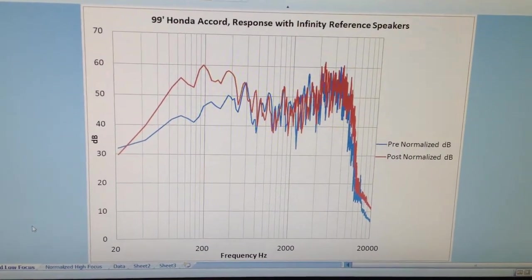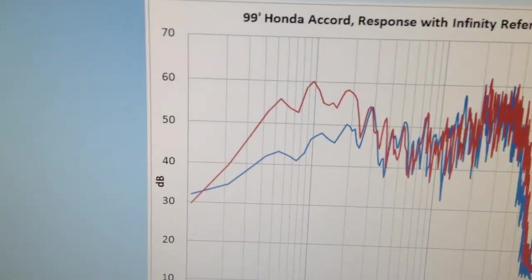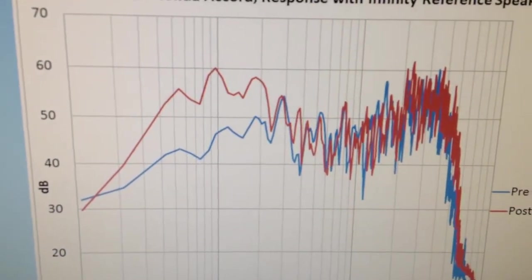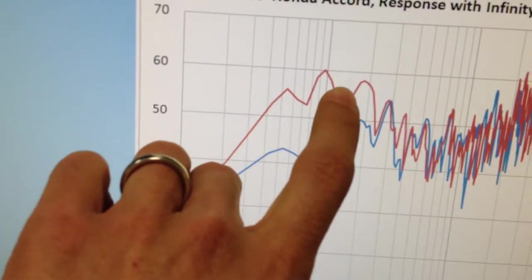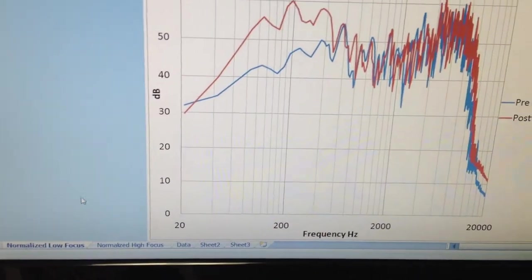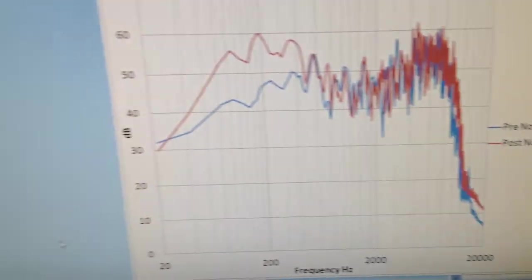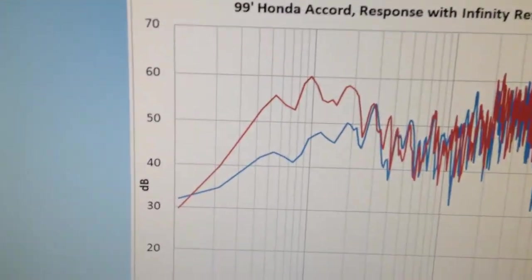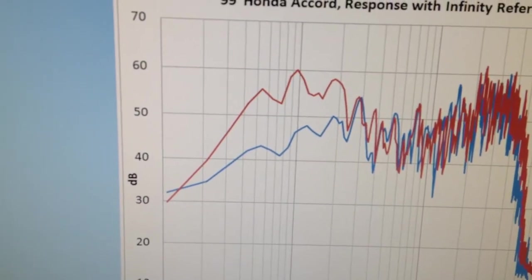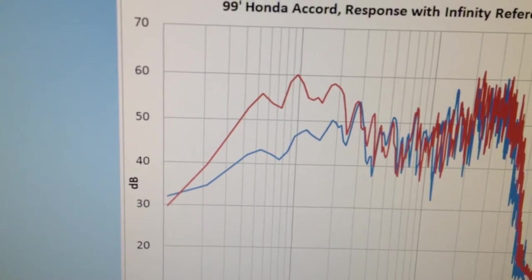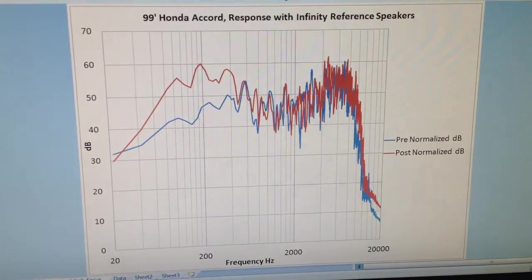You can see this first graph here is focusing on the lower frequencies. The upper line here is the Infinity aftermarket speakers versus the stock speakers. You can see there's an improvement at high frequencies also, which I'll zoom in on in the second graph. But this amount of improvement is huge. I mean, six decibels is double the loudness, and here we have more than ten decibels in a lot of the lower frequencies.